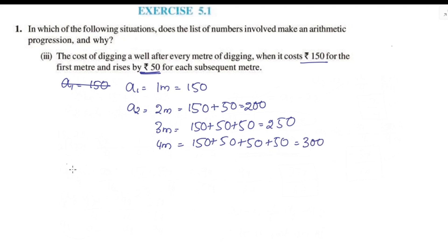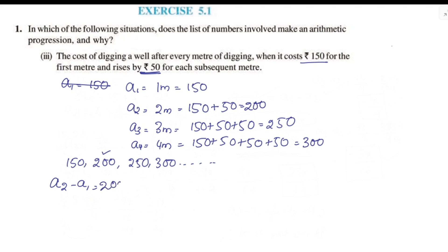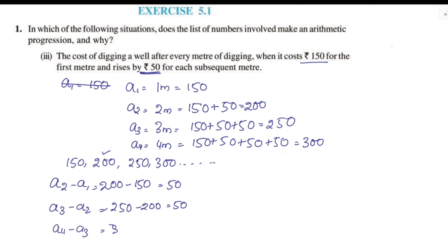The list of numbers is 150, 200, 250, 300. A2 minus A1 = 200 minus 150 = 50. A3 minus A2 = 250 minus 200 = 50. A4 minus A3 = 300 minus 250 = 50. The difference is the same throughout. Therefore, it is an AP.